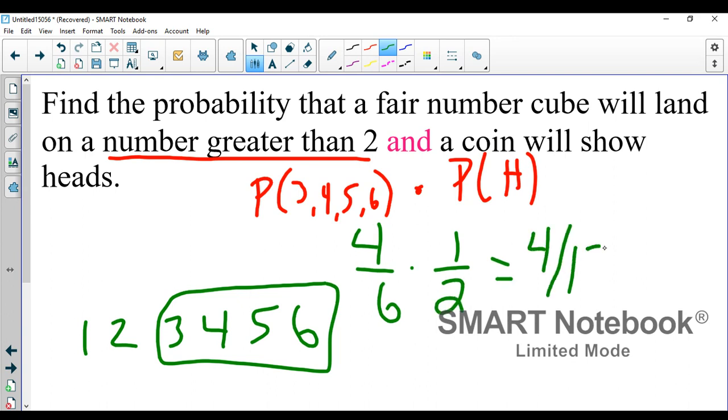Which gives you four out of twelve or one out of three. What that basically means is if you complete this experiment three times, you would be projected that one of those times you'd be able to roll a number that's greater than two and flip a heads.